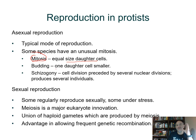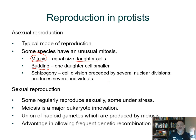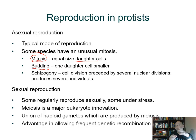Budding is a form of cytokinesis — mitosis has to happen because the nucleus divides — in which the two daughter cells produced are unequal: one is smaller, almost like a little cell that buds off the larger one and then has to grow to become a full-sized cell.